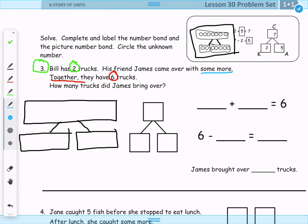And Bill has two trucks and James came over with some more. So we don't know how many James brought. And so, of course, what we need to do is we need to take our whole and draw representative circles in our number bond until we get to six and take the part that we do know and draw that in here and then draw our circles in our other part until we get to six which is our whole.